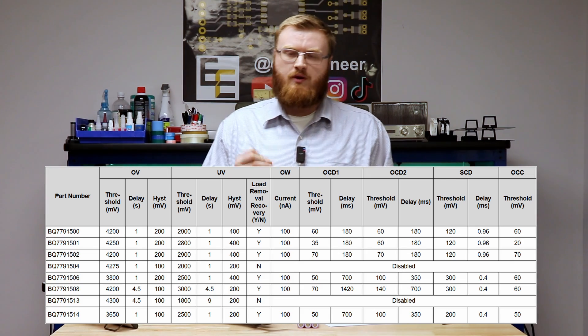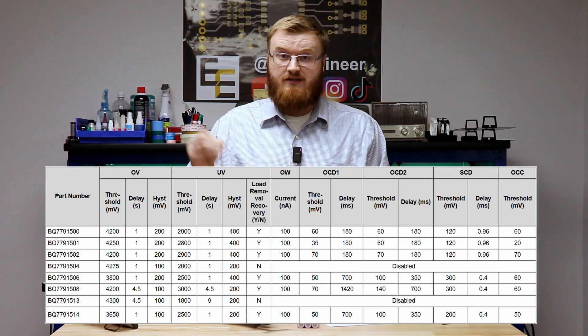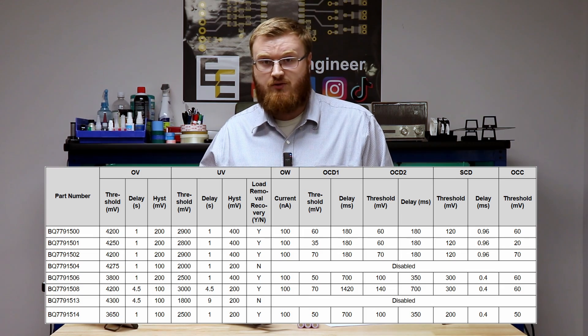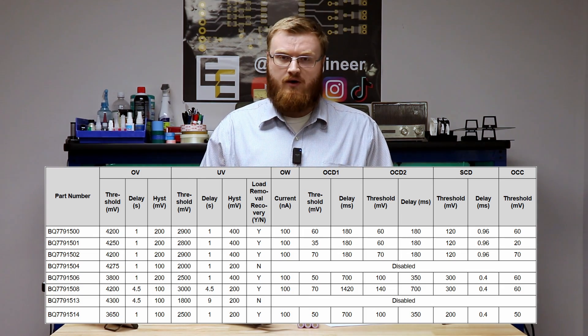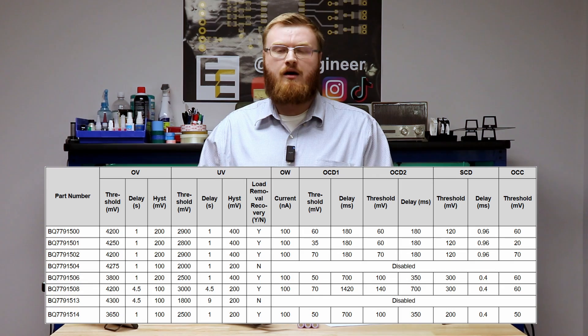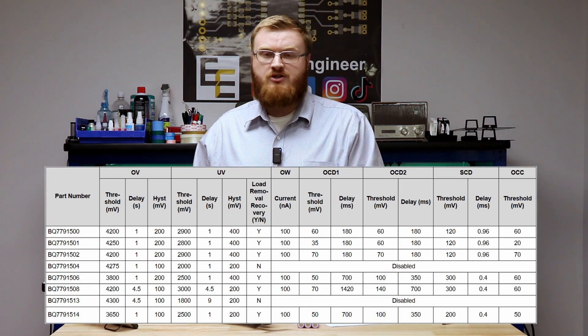So in these chips, your voltage trip points, your current sense points, and then your temperature trip points are all hardware set. And you pick the one you need from the table.